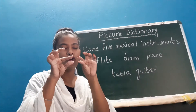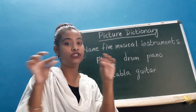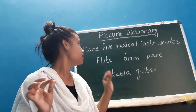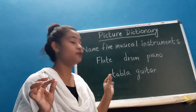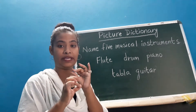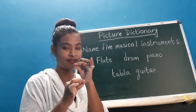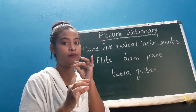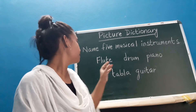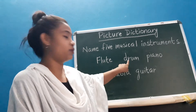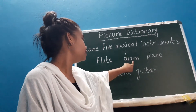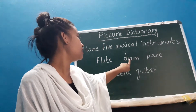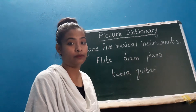So flute is a long wooden instrument. You have to hold it like this and play. Now next one: drum. D-R-U-M, drum. I repeat: D-R-U-M, drum.